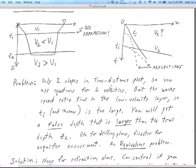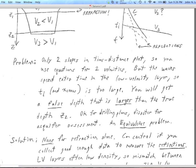But essentially, because there's only two slopes in the time distance plot, you go ahead and use your equations for two velocities, just as we have above. The trouble is, the waves are spending extra time in the low velocity layer. So the intercept time and the crossover distance as well, they're both too large. And you'll get a false depth that is larger than the true depth.